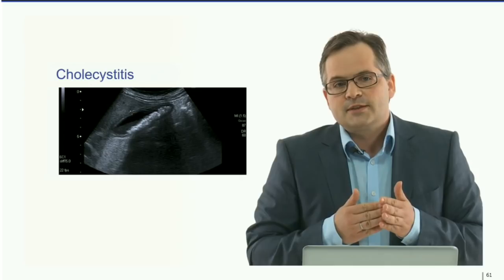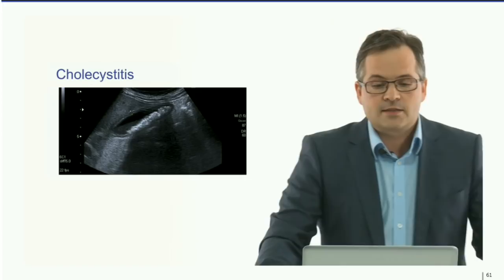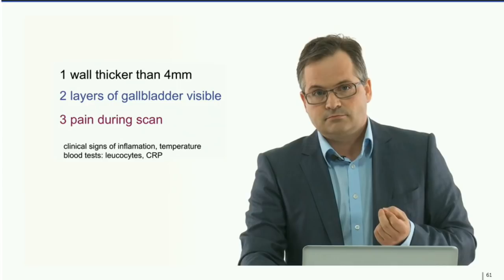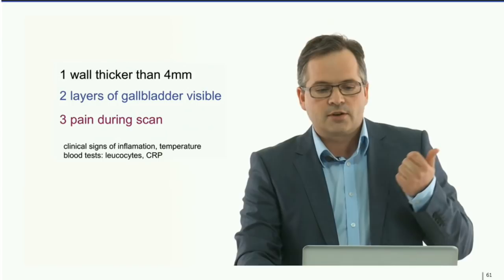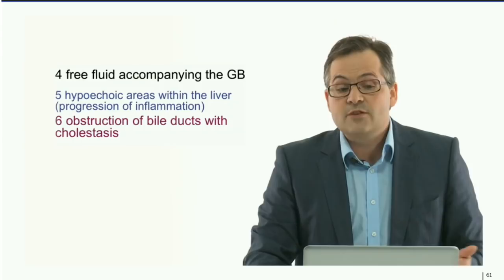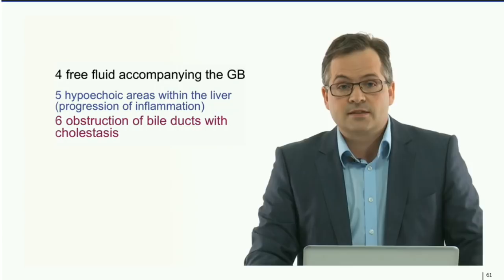Summary of sonographic findings: the wall is thicker than four millimeters, layers of the gallbladder are visible, and there is pain during the scan. If we see free fluid around the gallbladder, the infection process has exceeded to adjacent organs. We can also see hypoechoic areas within the liver and possibly obstruction of bile ducts due to gallstones.